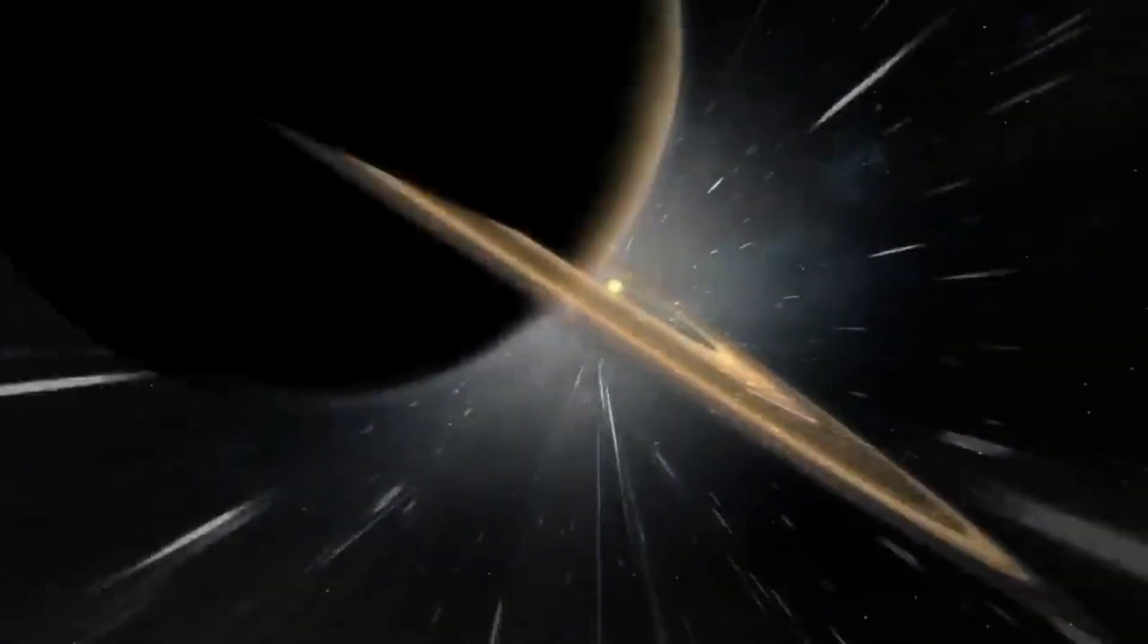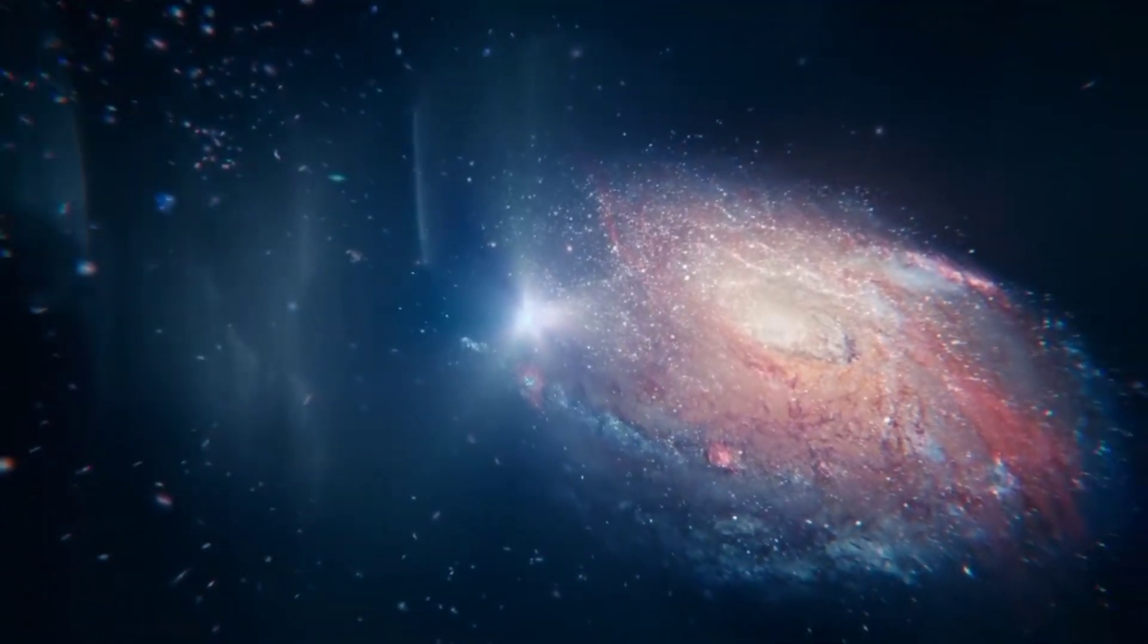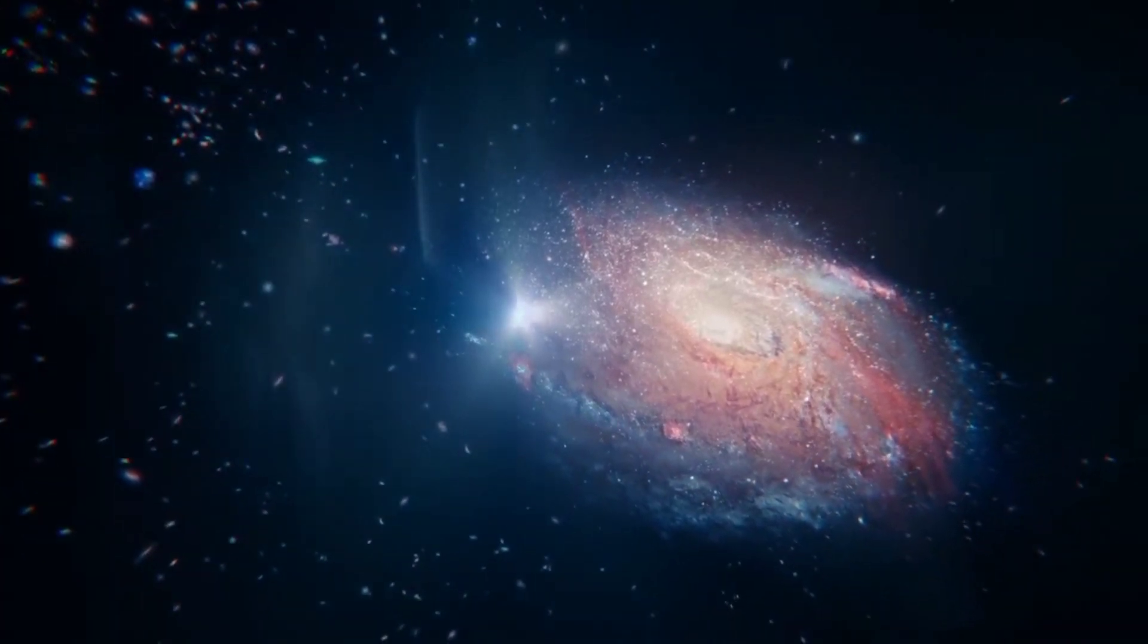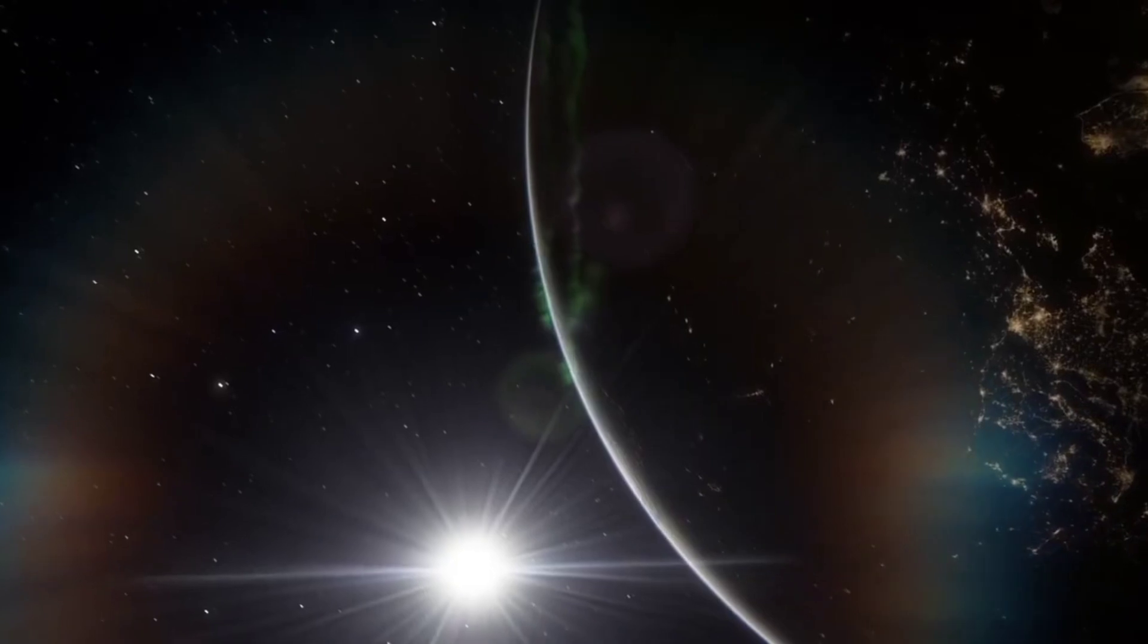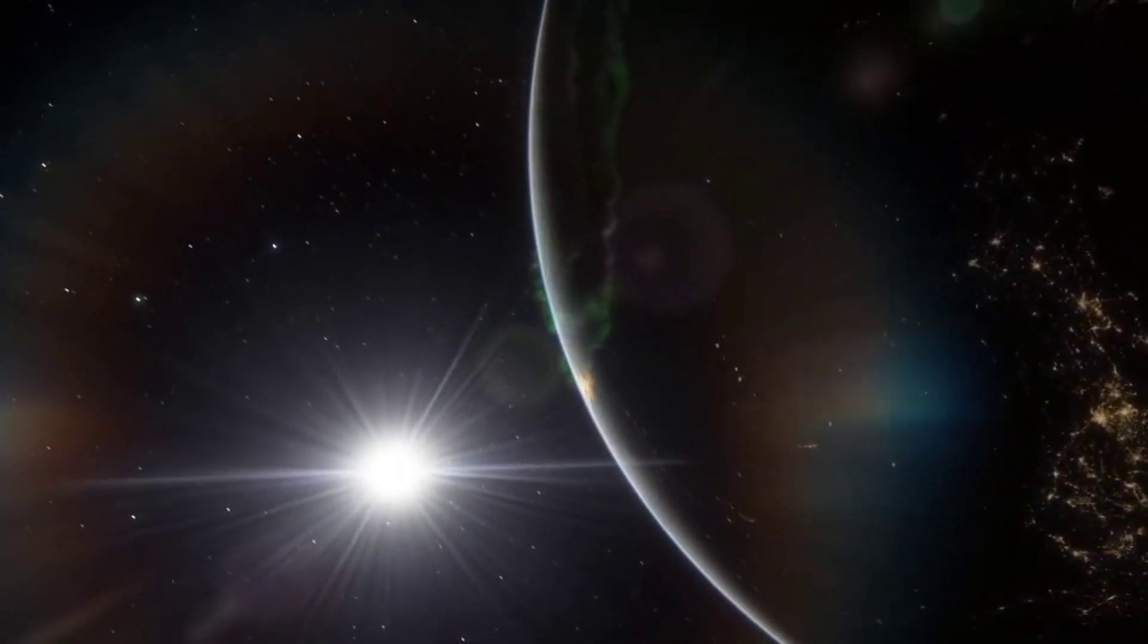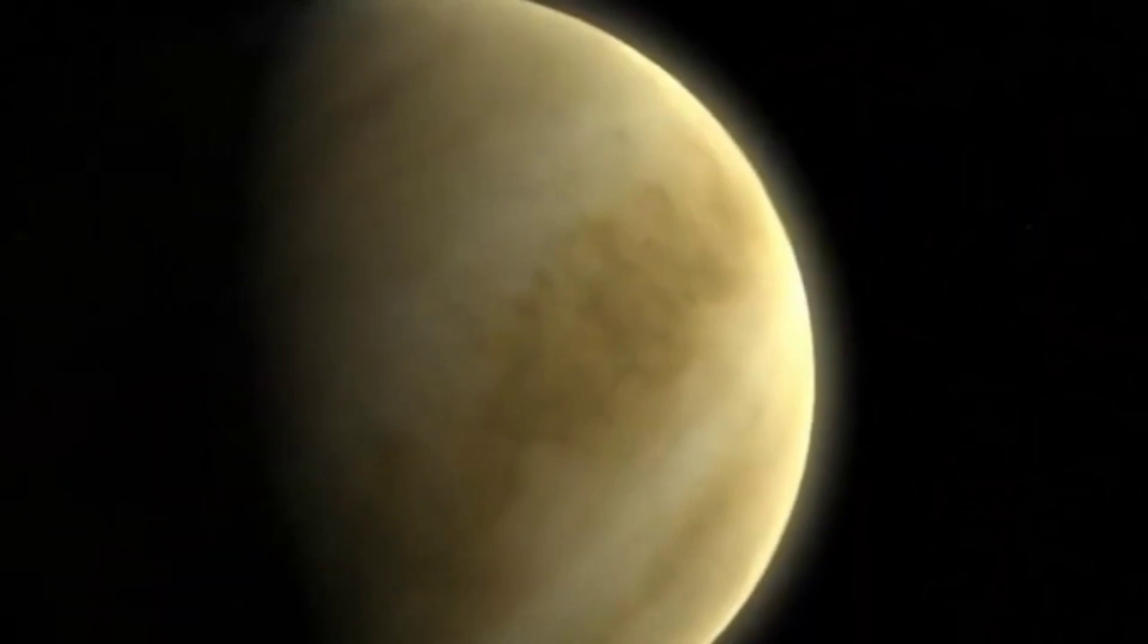One billion years from now, the sun intensifies, heating the Earth's surface to 47 degrees Celsius. Oceans evaporate, creating a potent greenhouse effect. Earth loses its hospitable nature in our solar system.